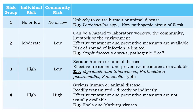Risk group 1 organisms have low or no risk to the individual handling them and the community. They are unlikely to cause human or animal disease. Examples are Lactobacillus species and non-pathogenic strains of E. coli.